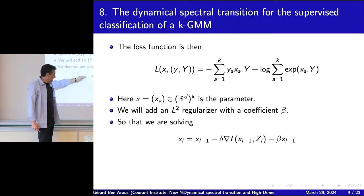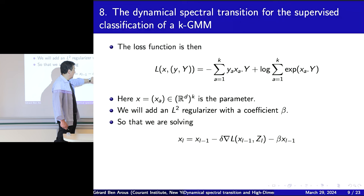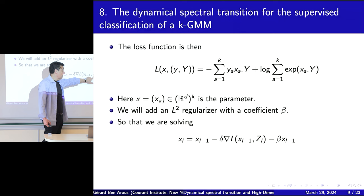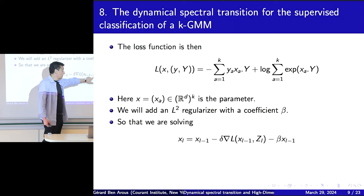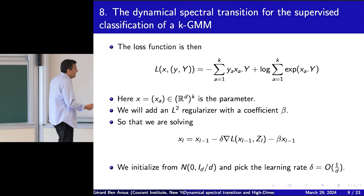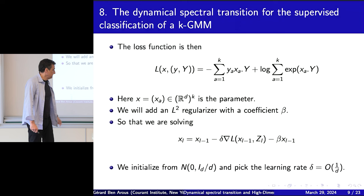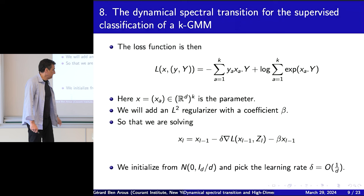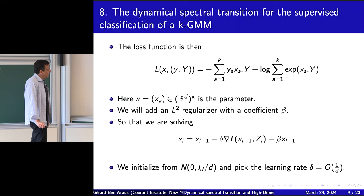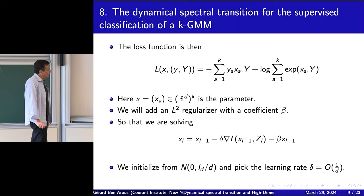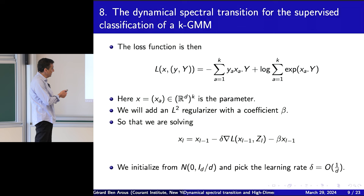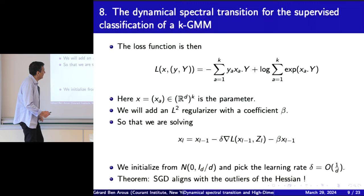In the online SGD: X at time L equals X at time L-1 minus delta times the gradient of the loss at the L-th sample Z_L, minus beta times X (the L2 regularizer gradient). We initialize from Gaussian, normalized with the standard size for high dimension. We pick learning rate delta of order O(1/D), which is the right phase where things work.